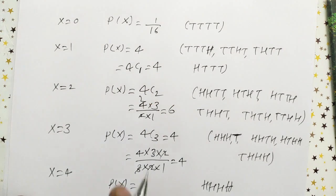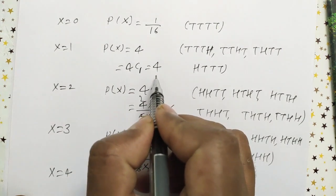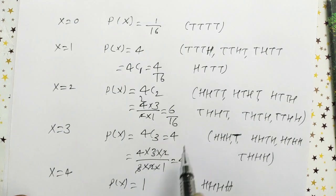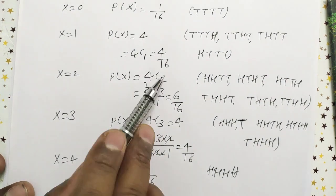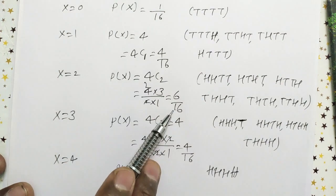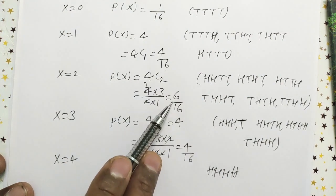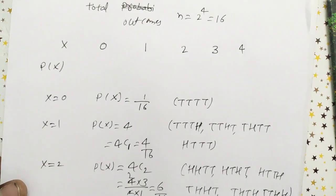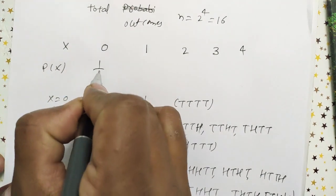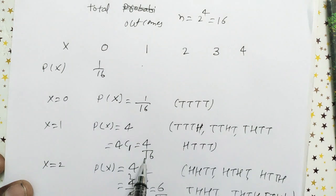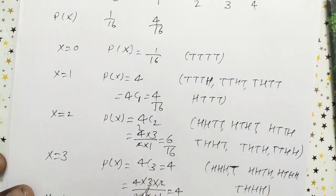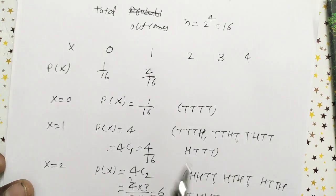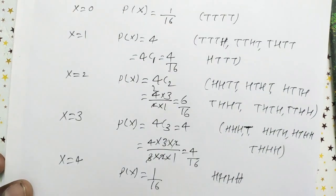Now we write the probability distribution table. The total outcomes are 16. P(X=0) = 1/16, P(X=1) = 4/16, P(X=2) = 6/16, P(X=3) = 4/16, P(X=4) = 1/16.